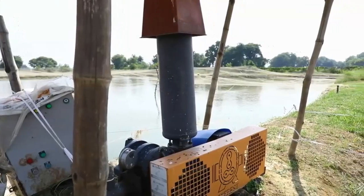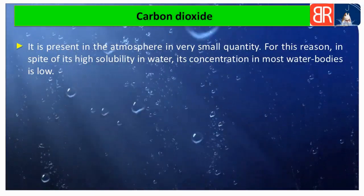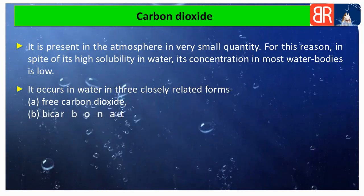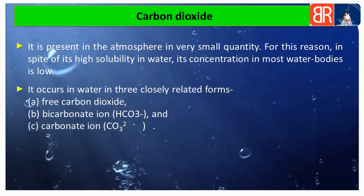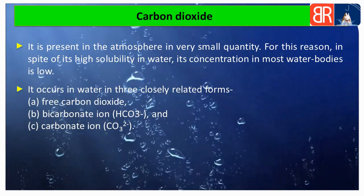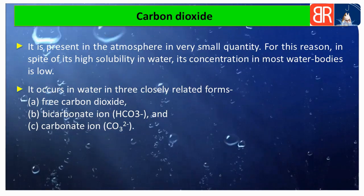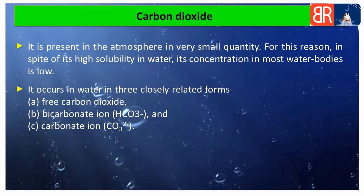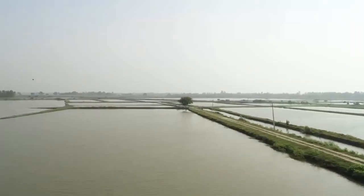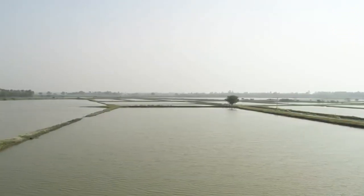इसी कारण से water में इसकी high solubility होते हुए भी बहुत से water bodies में इसका concentration low होता है। Carbon dioxide water में तीन related forms में पाया जाता है: पहला है free carbon dioxide, दूसरा है bicarbonate ion (HCO₃⁻), और तीसरा है carbonate ions (CO₃²⁻)।